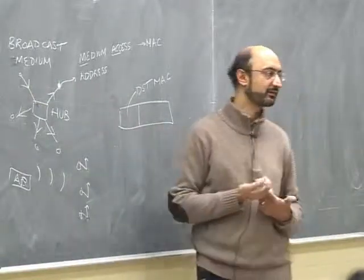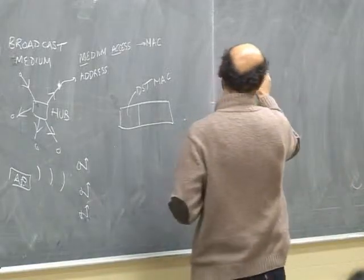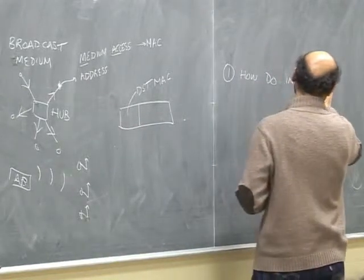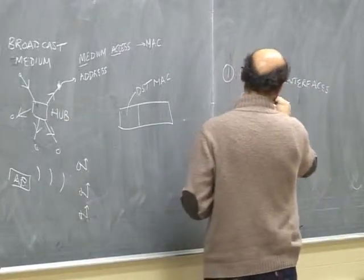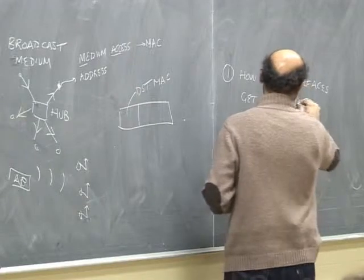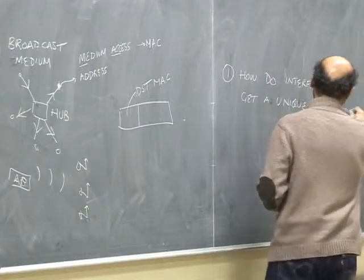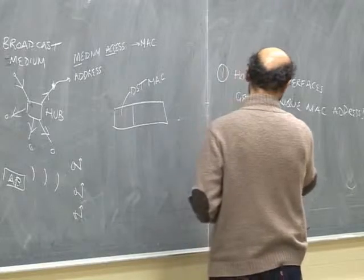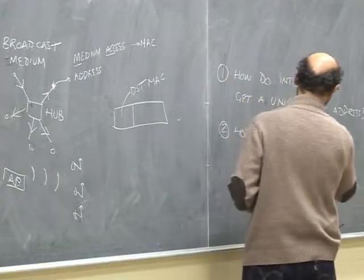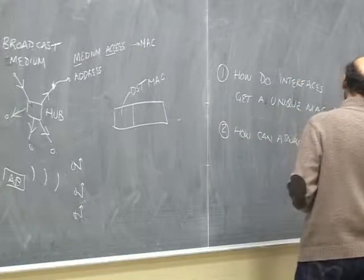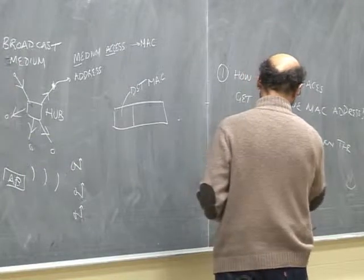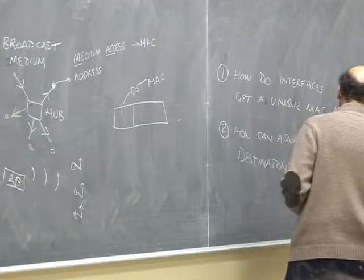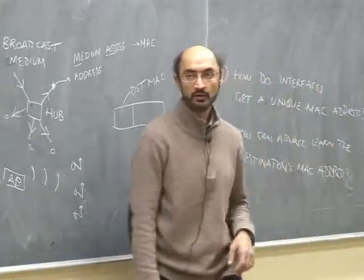The source needs to know the destination's MAC address somehow. So we have two questions: first, how do interfaces get a unique MAC address? And second, how can a source learn the destination's MAC address? Once we answer those, we'll know how to route data inside a LAN.